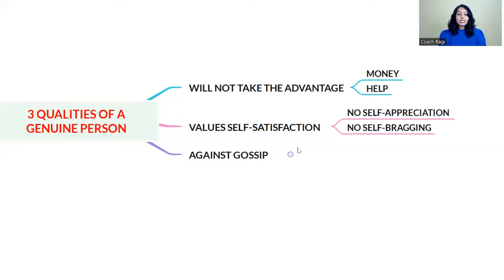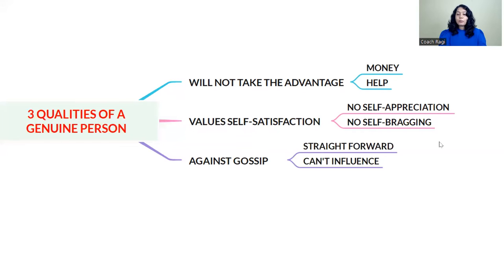The third quality of a genuine person is very important: that person is against gossip and is straightforward. If a person is genuine, they will say whatever mistake you have done straight to your face. Another very important thing is that the person will not be influenced by other people or anything else. Nobody can influence a genuine person.